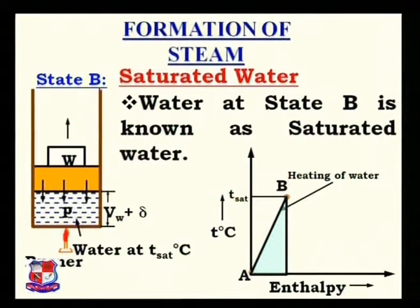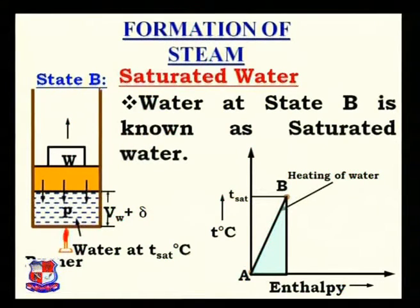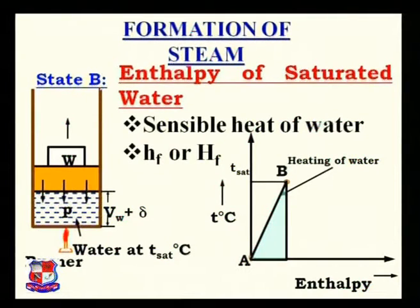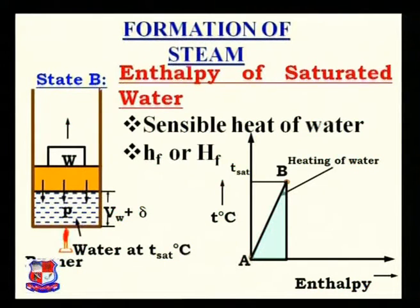For example, if the pressure of water is one atmospheric pressure and temperature is 50°C, then that water is known as unsaturated water or unsaturated liquid. At point B, the temperature of water is the saturation temperature, so it is known as saturated water. The heat supplied to transfer water from 0°C to the boiling point is known as the enthalpy of saturated water, also known as the sensible heat of water.